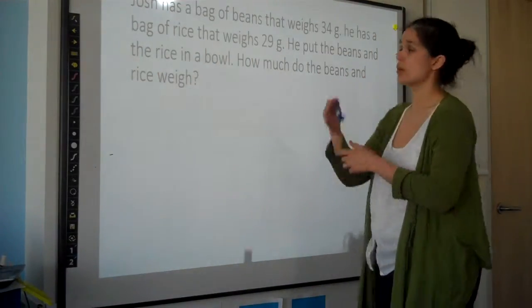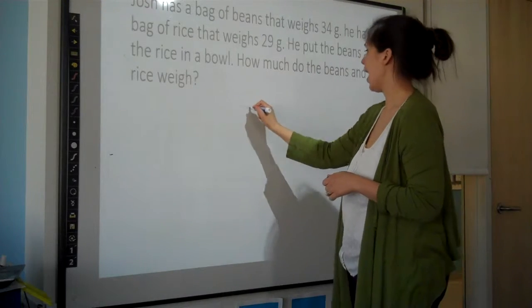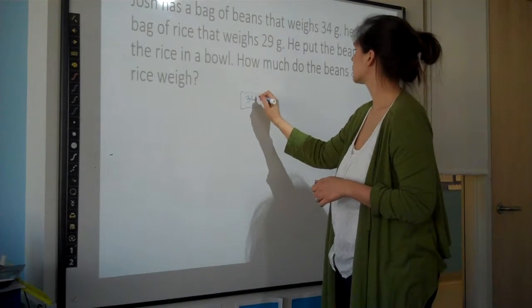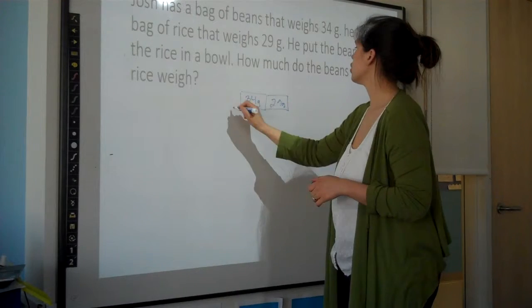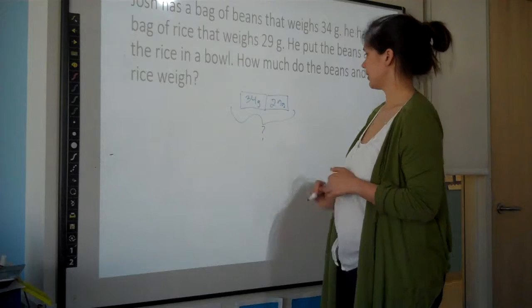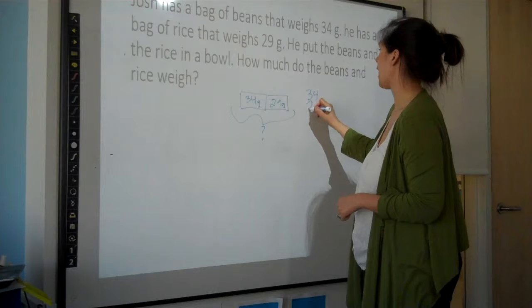So for this problem, I'm going to weigh my beans and weigh my rice. We're going to talk about it. I'm going to say, okay, I have my beans, I have my rice, and I want to know in the bowl there is the amount in the bowl that I'm looking for. So I see this as an addition problem. I'm going to add.